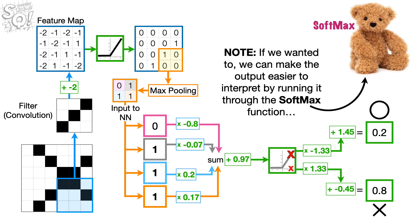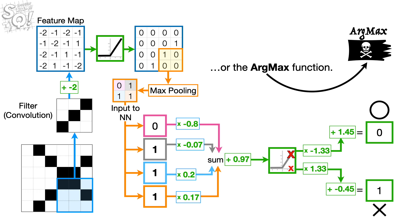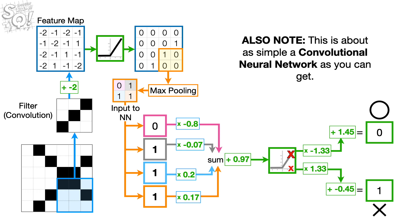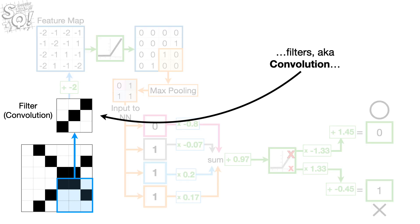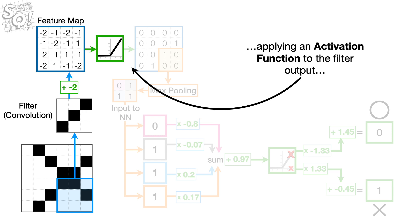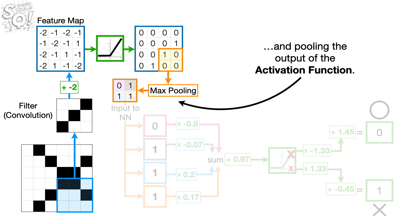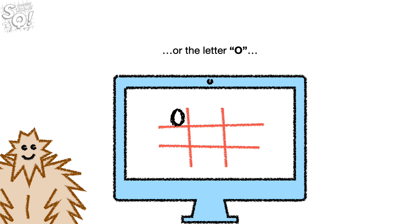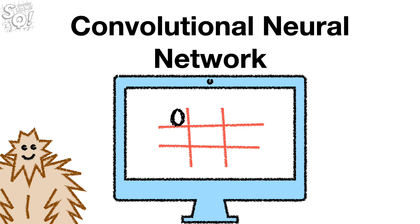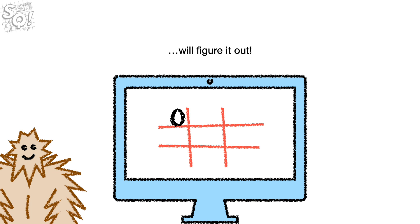Note, if we wanted to, we can make the output easier to interpret by running it through the softmax function or the argmax function. Also note, this is about as simple a convolutional neural network as you can get. However, no matter how fancy the convolutional neural network is, it's still based on filters — a.k.a. convolution — applying an activation function to the filter output, and pooling the output of the activation function. Now the next time Statsquatch decides to play tic-tac-toe with their computer, Statsquatch can start with the letter X or the letter O, and a convolutional neural network will figure it out.